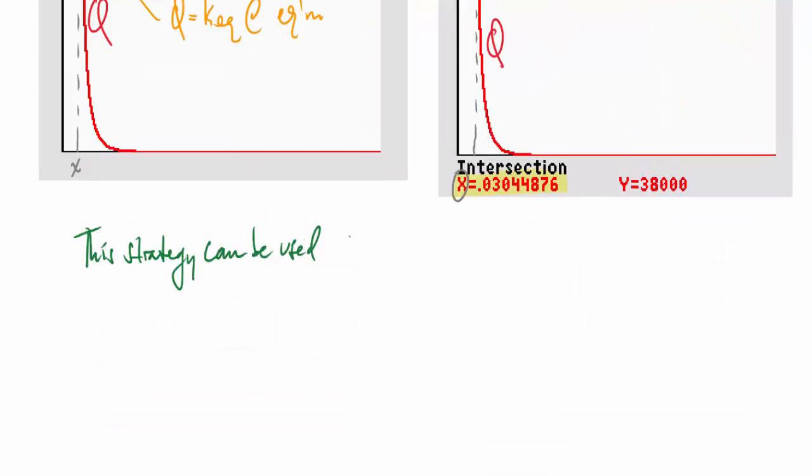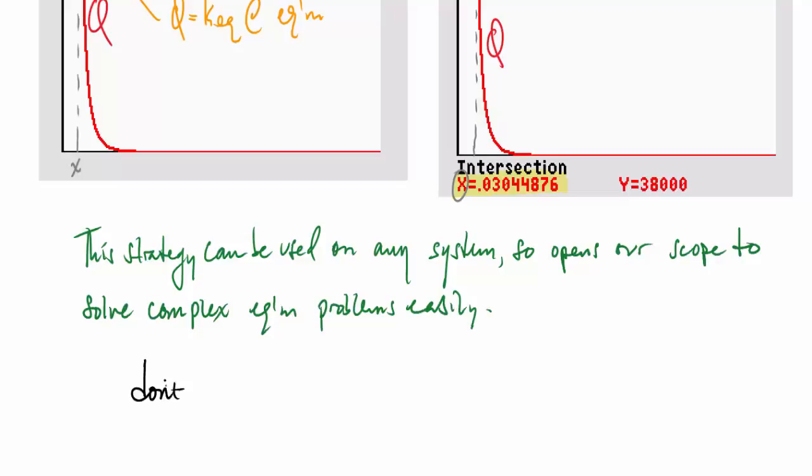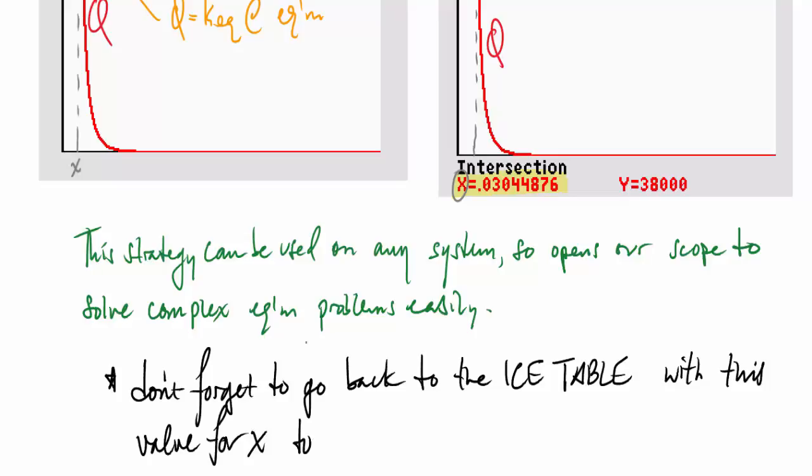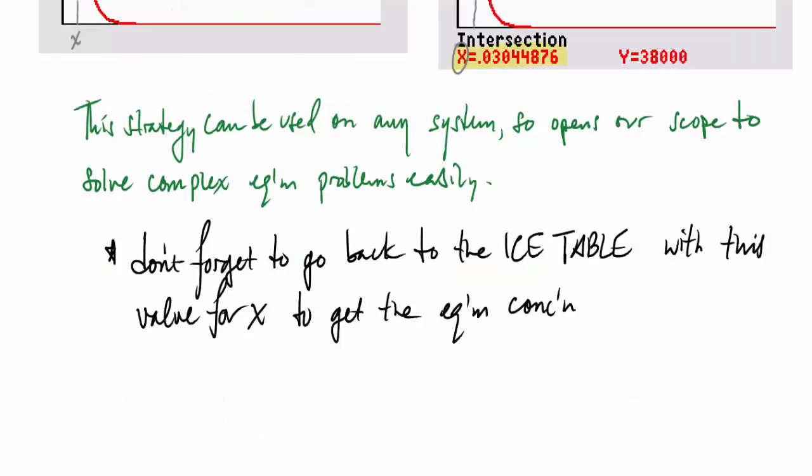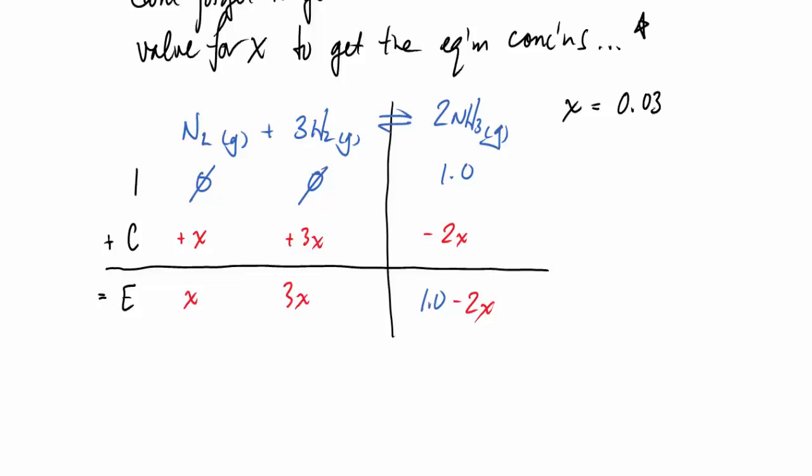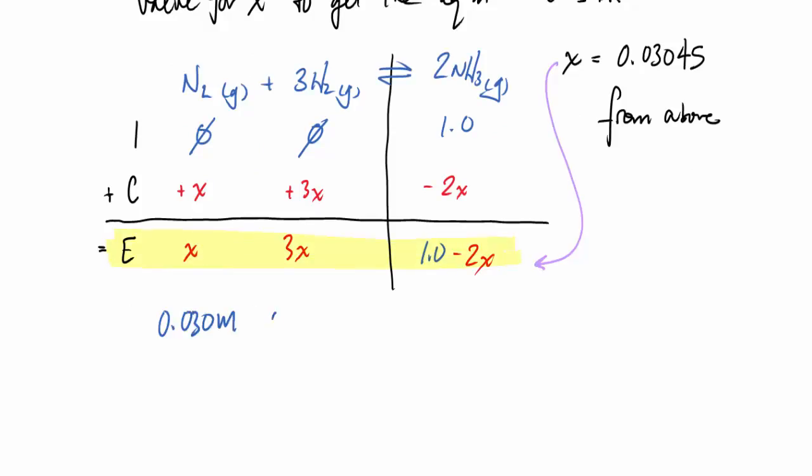So this strategy can be used on any system. So it really opens our scope to solve complex equilibrium problems quite easily. Remember, don't forget to go back to the ICE table with this value for x to get the final equilibrium concentrations. So here's our ICE table, there's a value of x from above, and we'll put that number down into the equilibrium line at the end and get those concentrations.